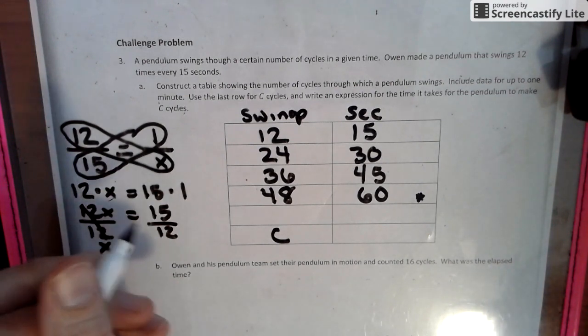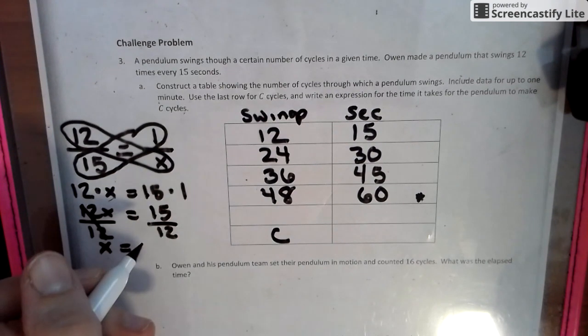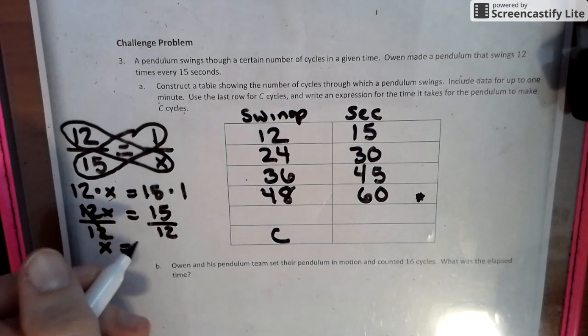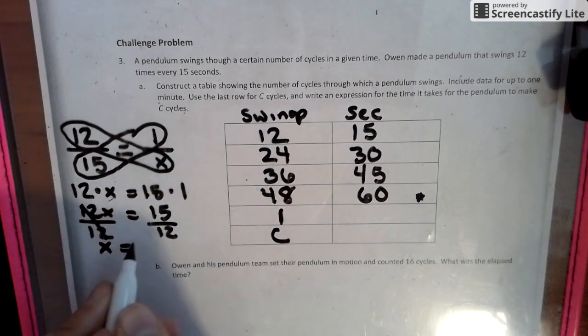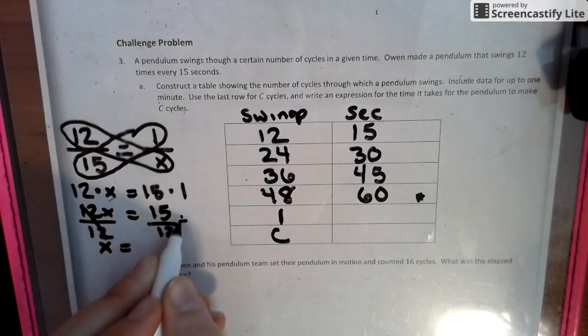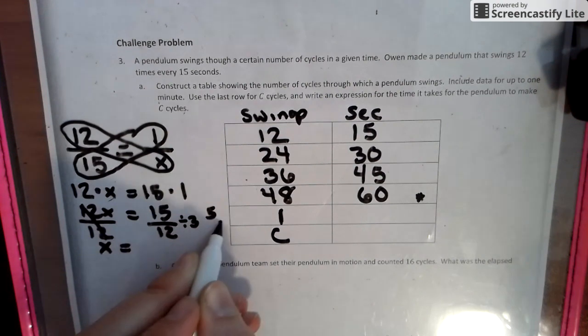So we can reduce this as a fraction, or we can make it into a decimal. It doesn't really matter because this is what's going to prove for our one swing. So one swing is going to be whatever we get here. So if we can divide by three, we will get five fourths.